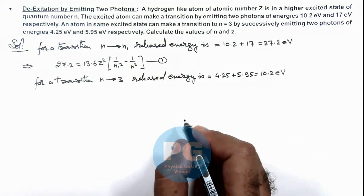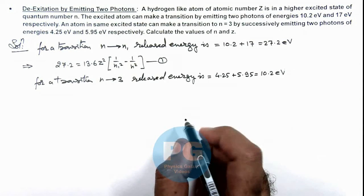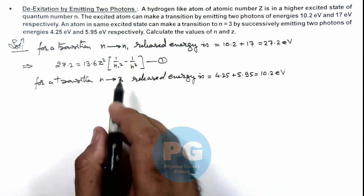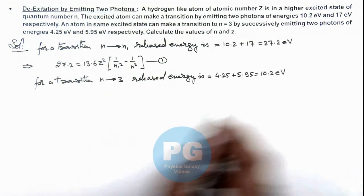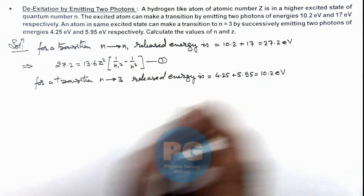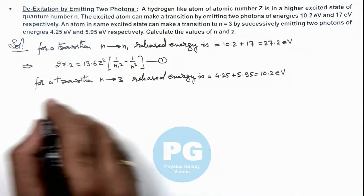So in this situation obviously if we talk about n1, then the value of n1 is certainly lower than 3 then only it could be lower, and this is higher than this. So in this situation we can write